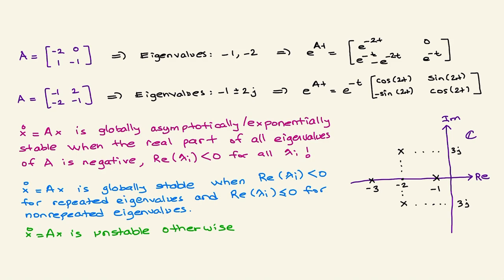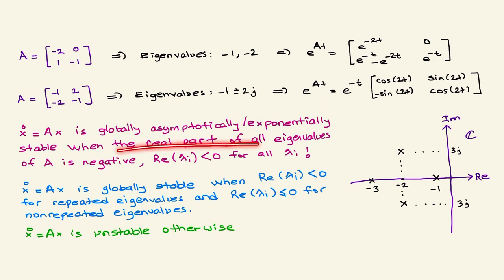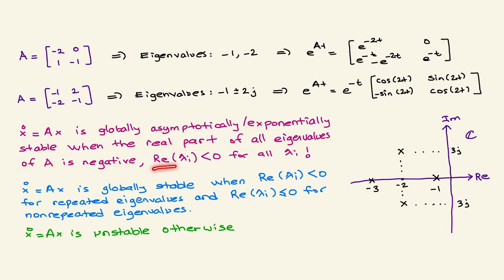To summarize: x-dot equals Ax is globally asymptotically or exponentially stable when the real part of all eigenvalues of A is negative. You may have a 10-by-10 or 20-by-20 A matrix — go to MATLAB and simply write eig(A). If all eigenvalues are in the left-half plane, meaning negative real parts, then your system is globally asymptotically or exponentially stable.